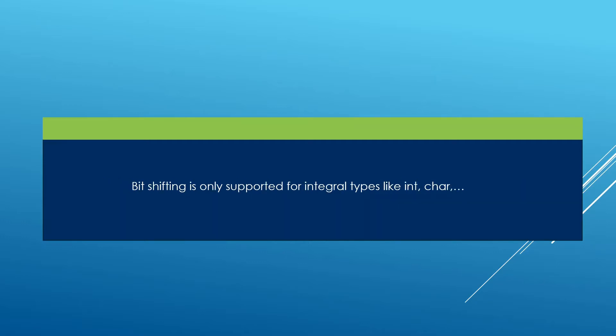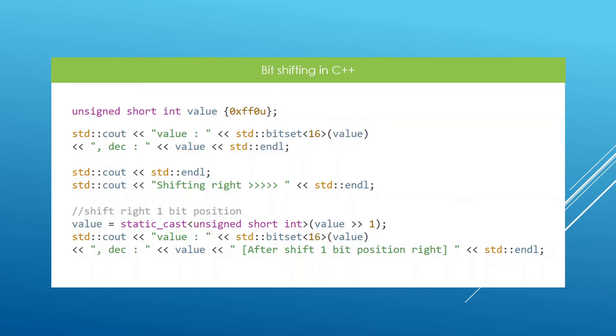Bit shifting is only supported for integral types, because that's where it really makes sense. Bit shifting floating points doesn't make any sense and is useful for nothing, so it's not supported in C++. Now that we have an idea of how left shifting and right shifting work, let's see how to do this in C++.